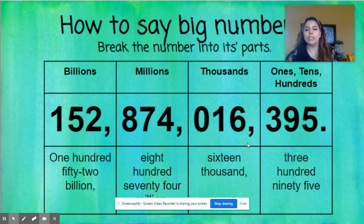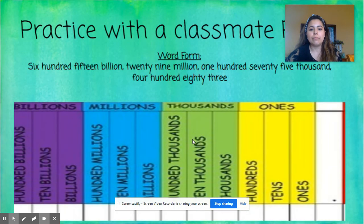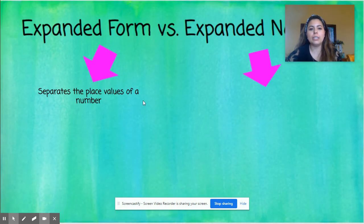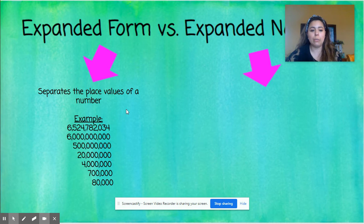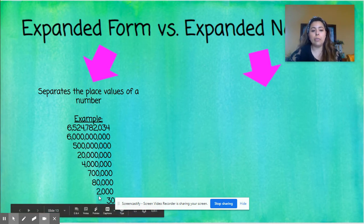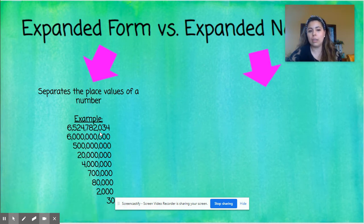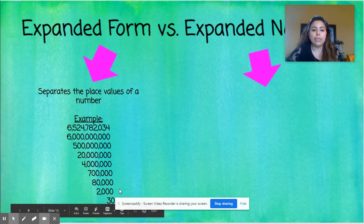Don't forget your decimal is going to be right next to your ones place. Expanded form separates the place values of a number. For example, with this number, you take apart the values — and notice that going from two thousand down to thirty, there was no hundreds digit because there was a zero there. Zero has no value in that particular hundreds place, so we went from two thousand down to thirty, and then four at the end.